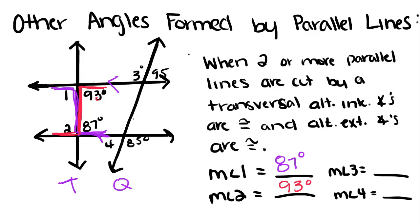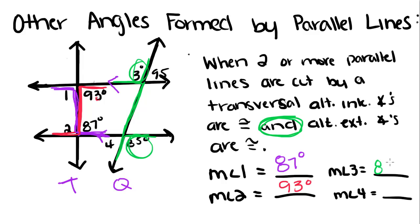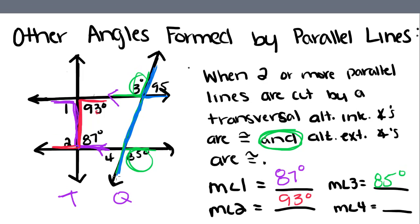I can't do that over here because I don't know what these measures are, but I can use the other part of this and say that alternate exterior angles are congruent, because both of these are congruent. So I start with angle 3 and draw my line down and go on to the other side, so angle 3 has to equal 85 degrees. Starting with 95, going down to angle 4, the measure of angle 4 has to be 95 degrees because these angles are congruent.